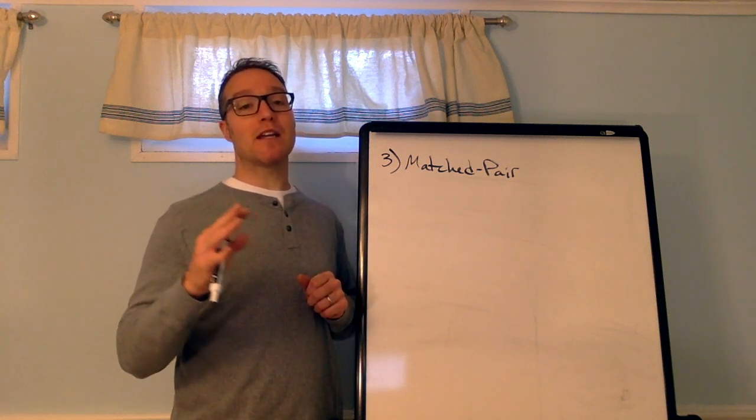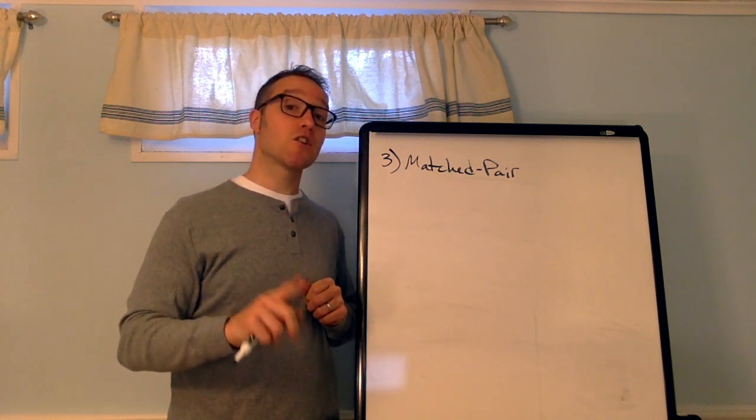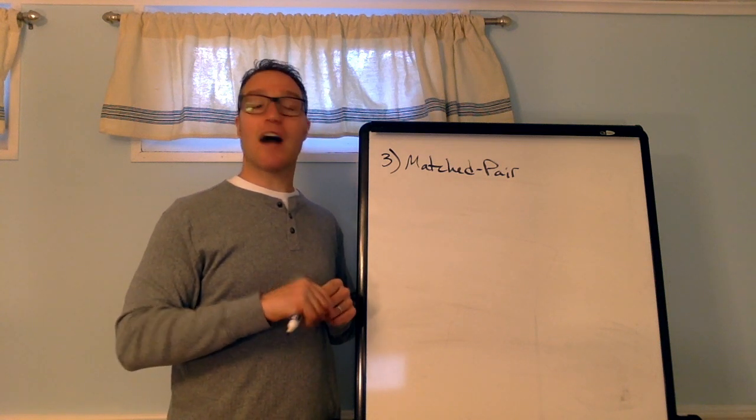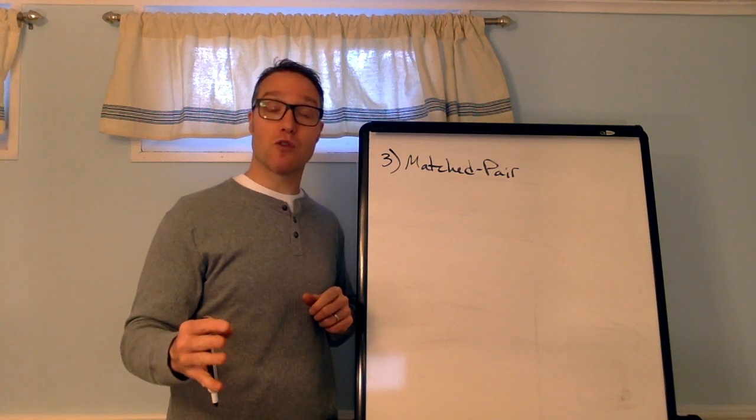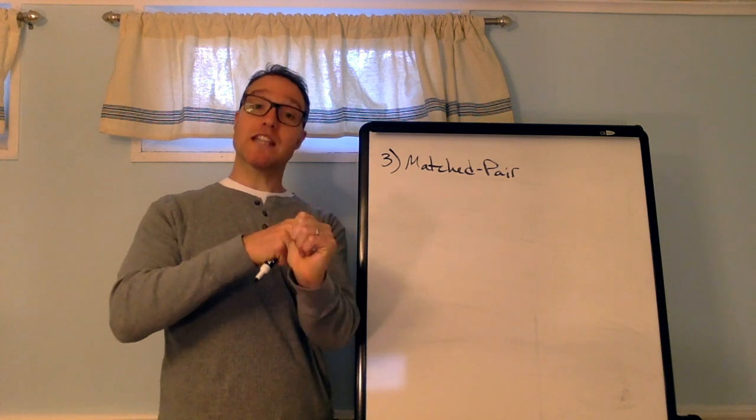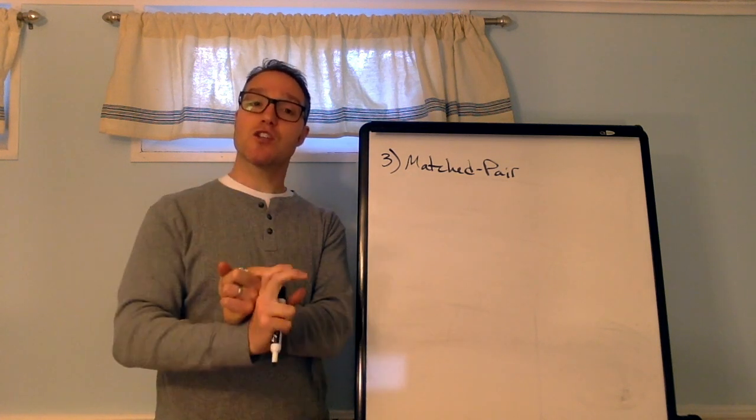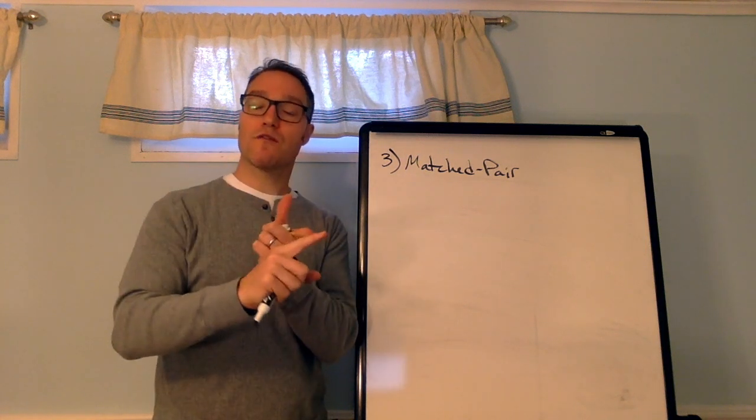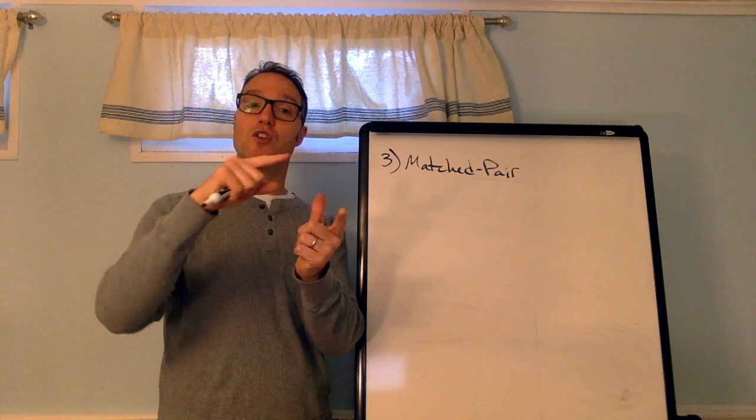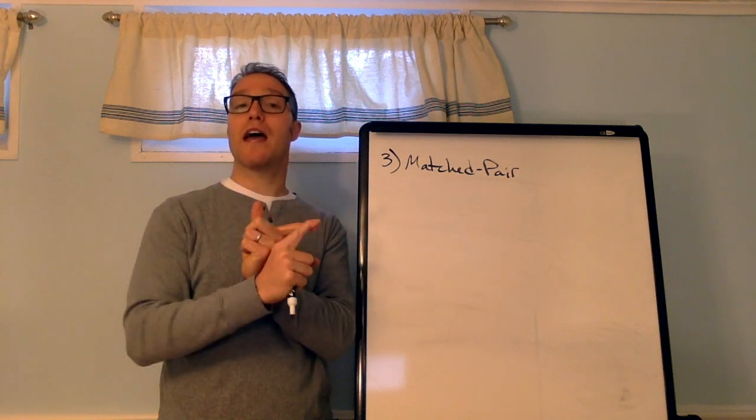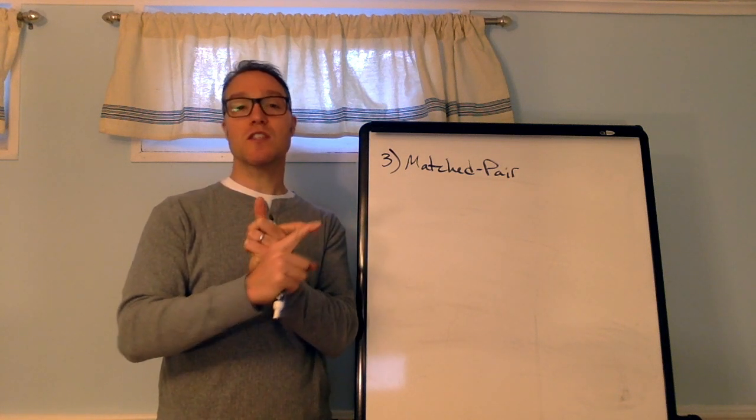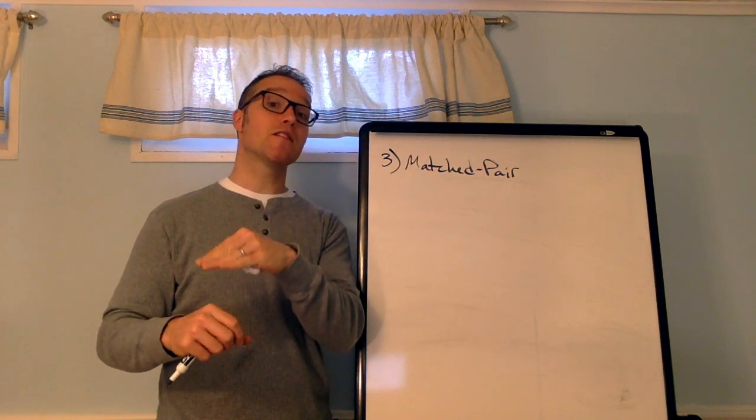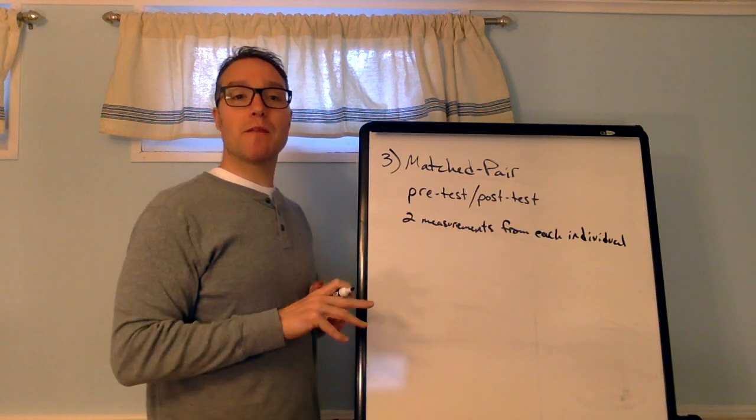This is really common in a pre-test, post-test situation. So, look out for that. So, in other words, if I want to try out my educational program. And I give you a pre-test, like a baseline. And then I test you at the end, a post-test. I'm comparing your initial baseline score to your final score after the treatment. So, you are your own control group and treatment group. Okay? So, this is basically when there are two measurements from the same individual.